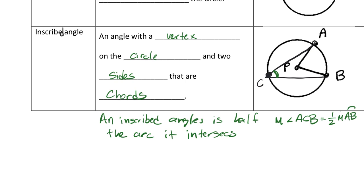So that means that using this formula, we can multiply by two on both sides, so that means that the arc, the measure of the arc, is going to be twice the measure of the angle.